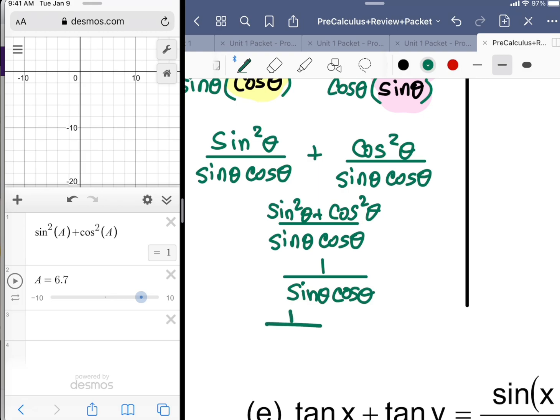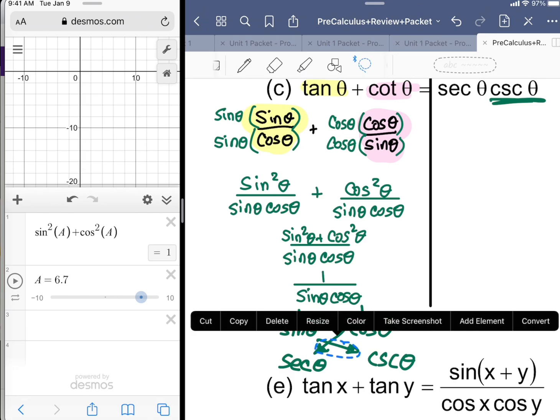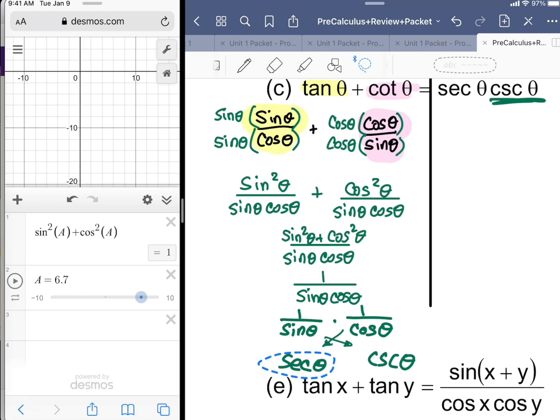One over sine theta cosine theta is the same as one over sine theta times one over cosine theta. One over sine theta is cosecant, and one over cosine theta is secant. I'm indicating that the result of one over cosine becomes secant and one over sine becomes cosecant. Now you have equality and you've completed your proof.